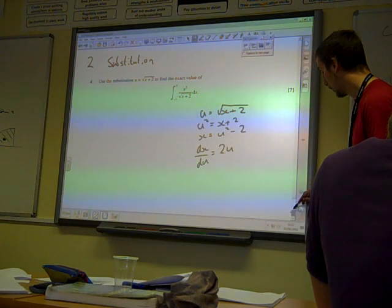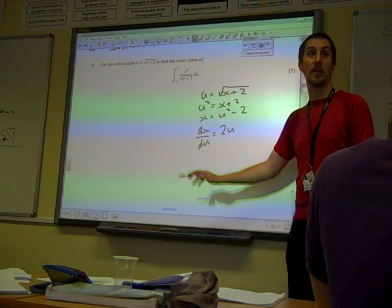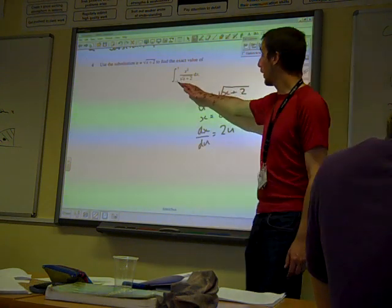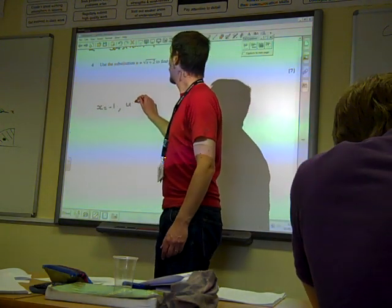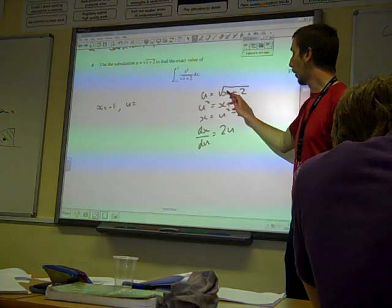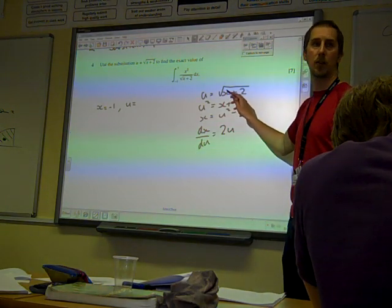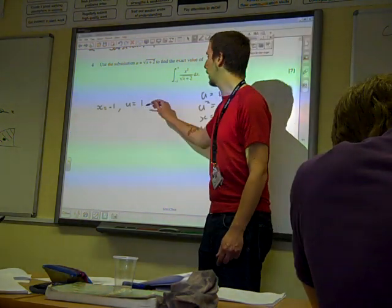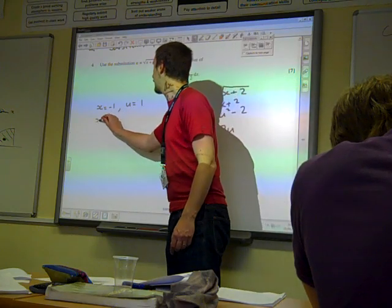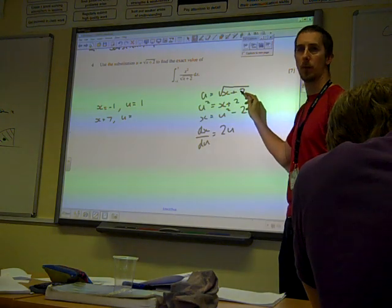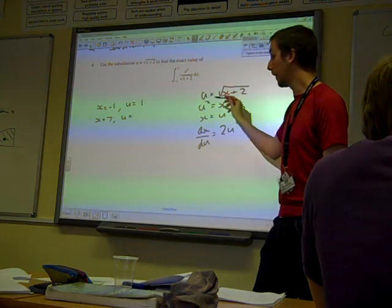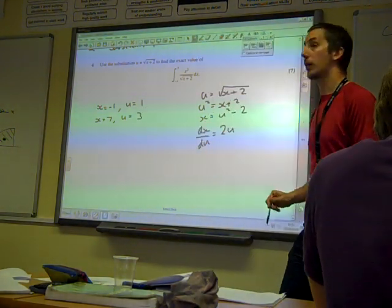And so now, we're also going to change the limits over. We've got that when X is minus 1, well, if X is minus 1, that means U equals the square root of 1. So U is 1. And if X is 7, U equals the square root of 7 plus 2. So the square root of 9, so U is 3.